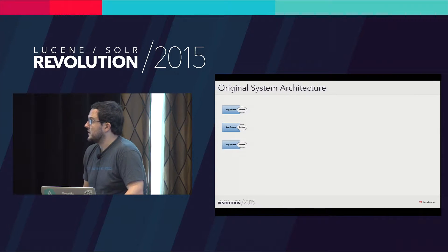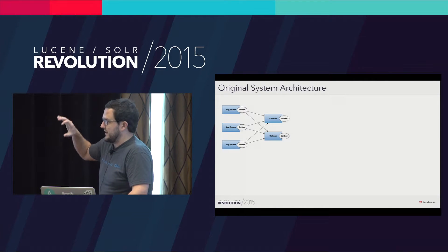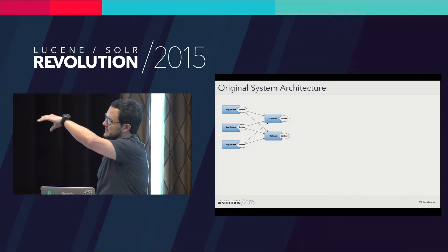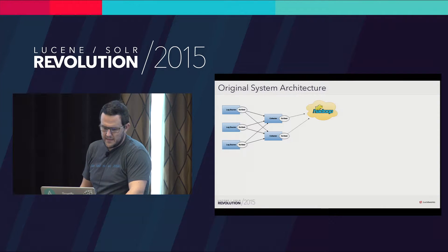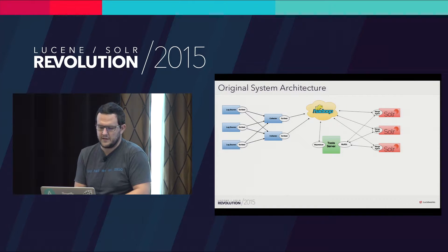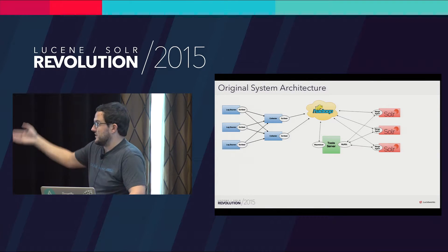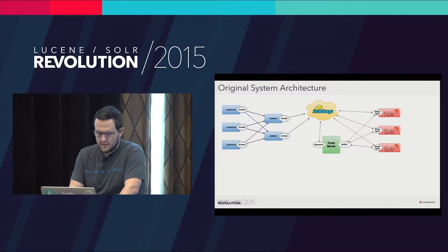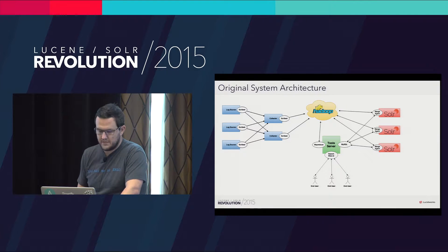Quick overview: we ran Scribe on each source machine, then had a tier of Scribe collector servers where we'd ship everything. That existed in each of our environments, and they'd all eventually ship logs to Hadoop. We had a set of tool servers with MySQL and cron jobs to generate indexes and support the web UI. An agent running on the Solr nodes would hit MySQL on the tool server, figure out what indexes it needed to grab out of HDFS, grab and merge them, making things searchable. We also had a UI running on that node that our support team would use.